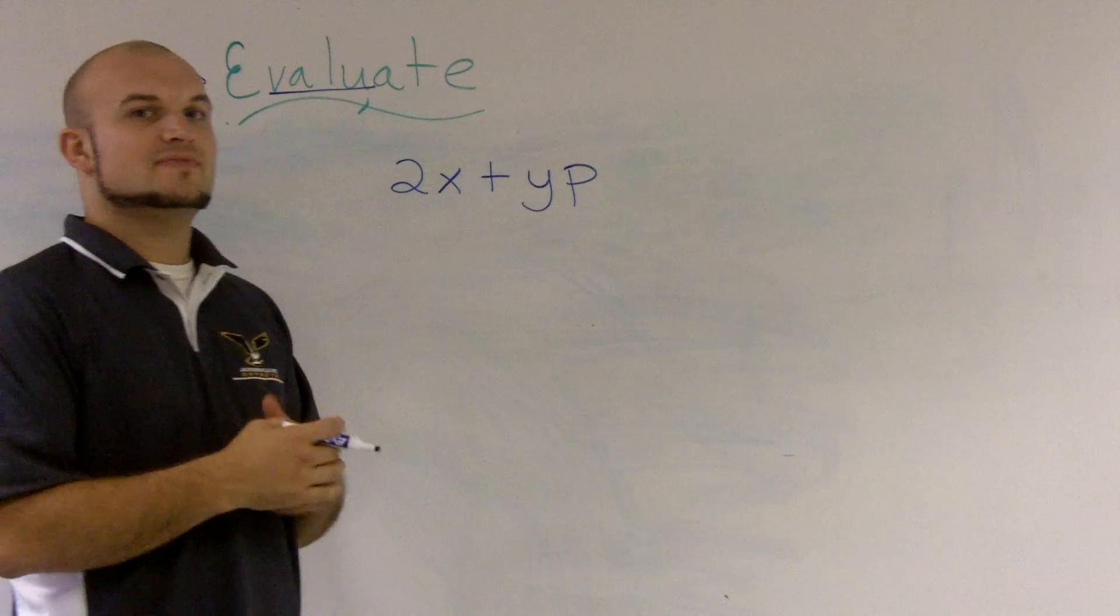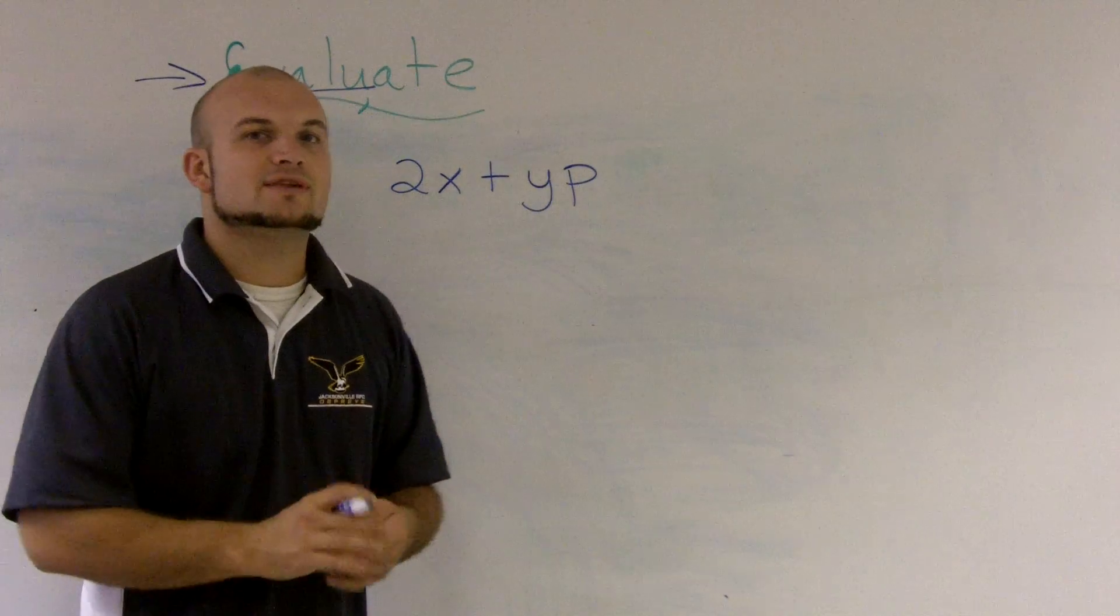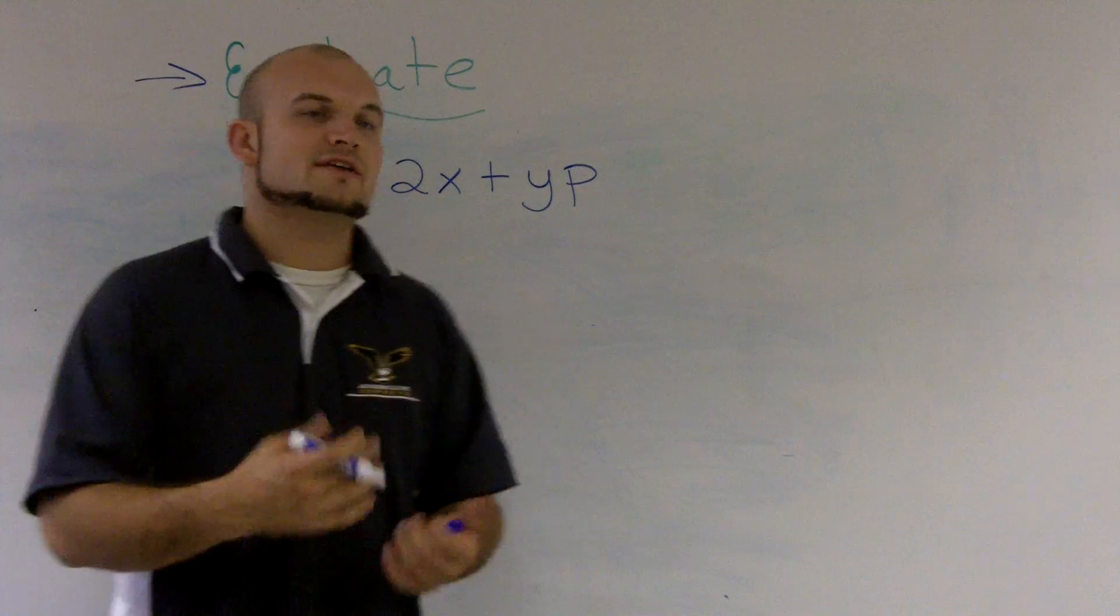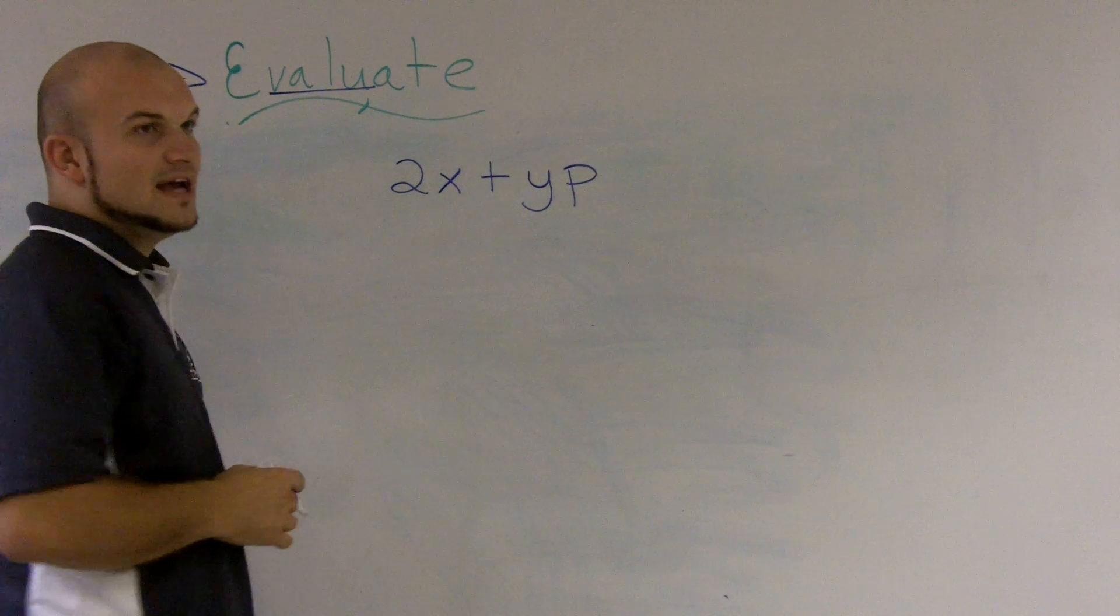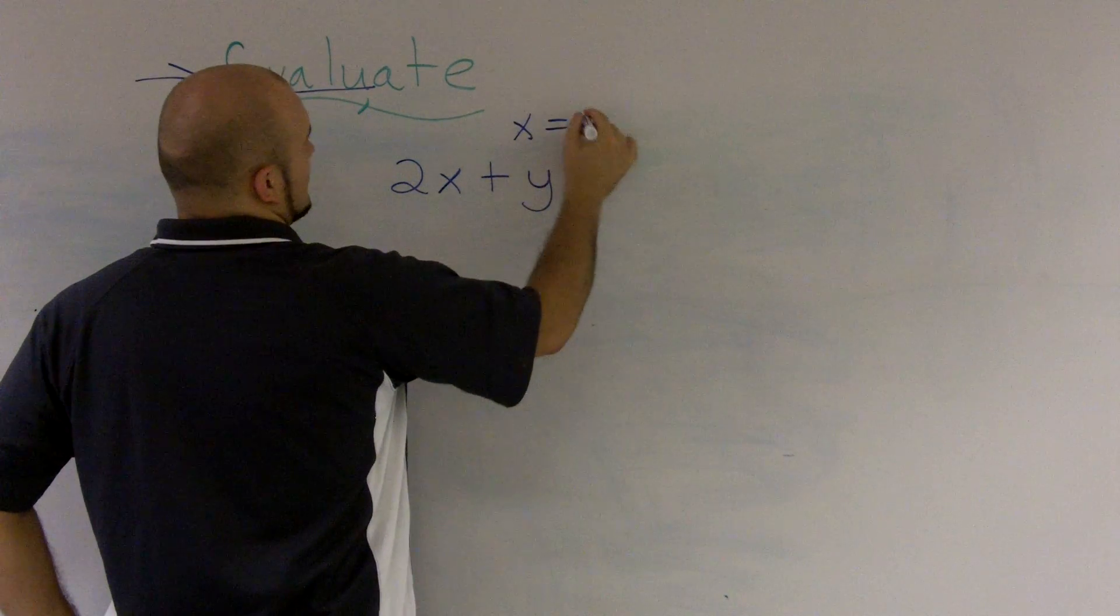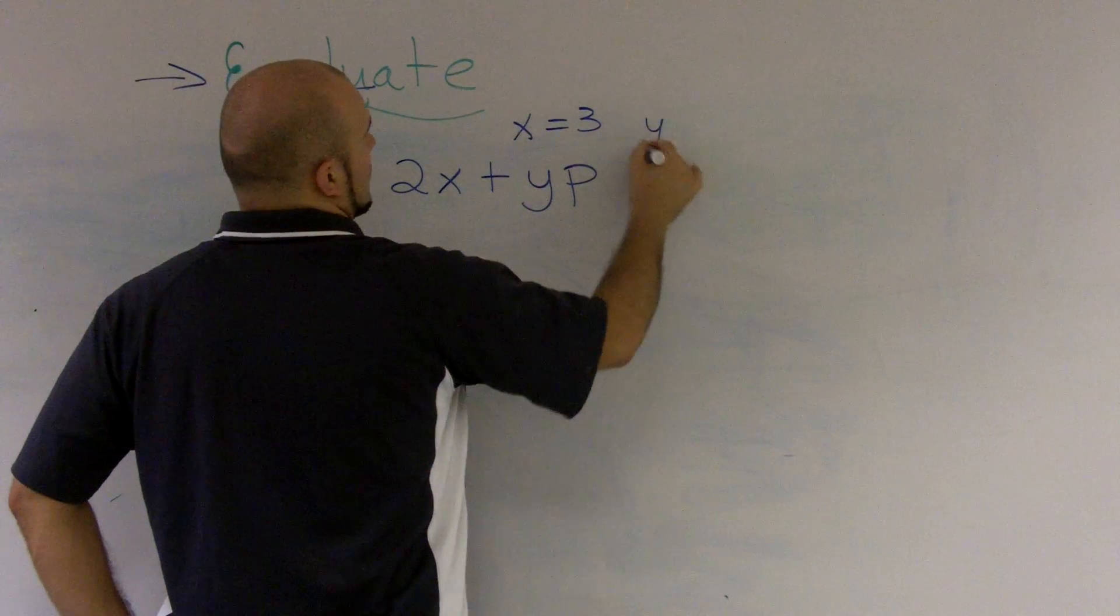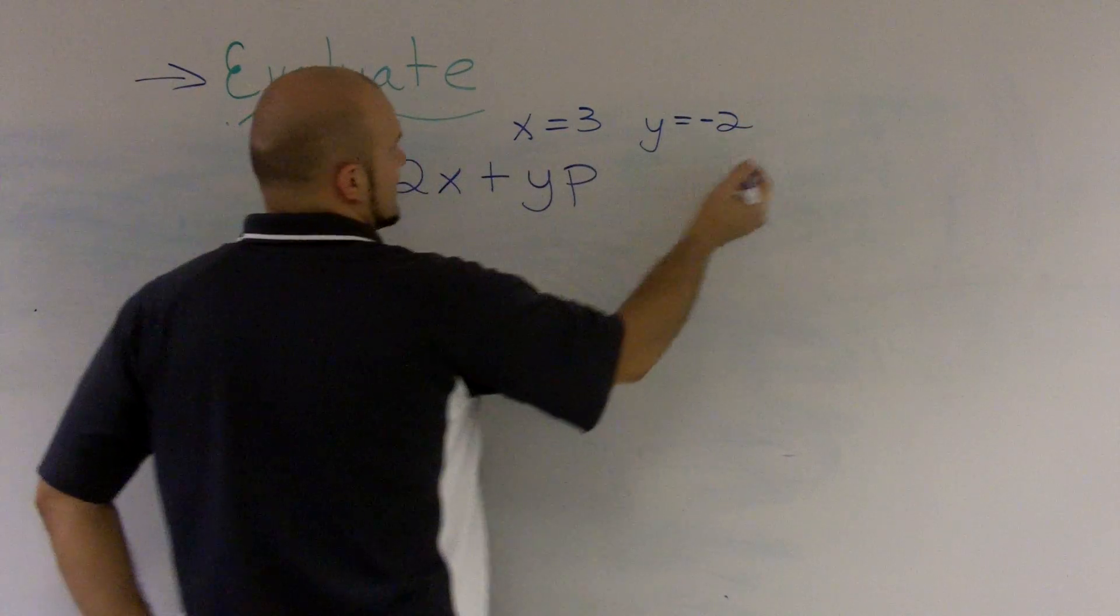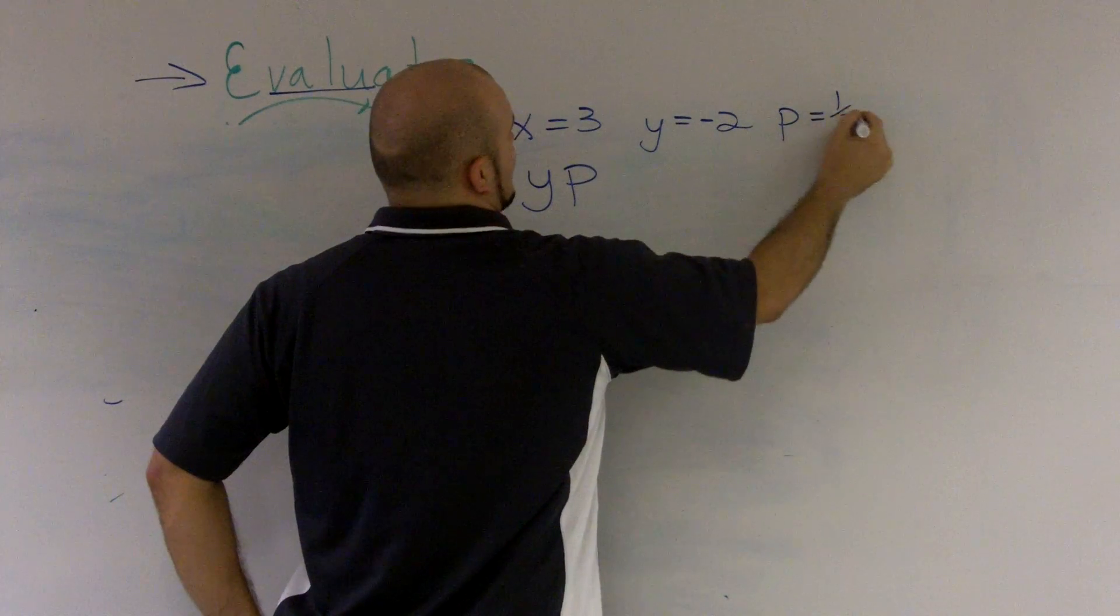Now, the difference for evaluating versus simplifying is we're going to evaluate for actually a set of terms, kind of like some constraints or definitions. So, let's say I want to evaluate when x equals 3, y equals negative 2, and p equals 1 half.